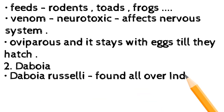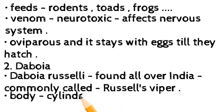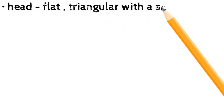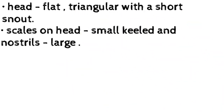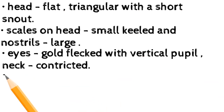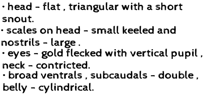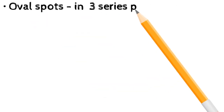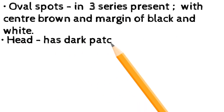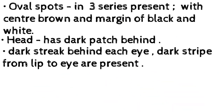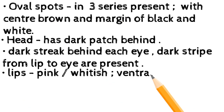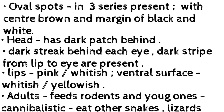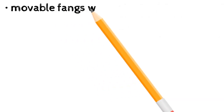The cobra feeds on rodents, toads, and frogs. Venom is neurotoxic, affecting the nervous system. Oviparous; stays with eggs until they hatch. Daboia russellii is found all over India, commonly called Russell's viper. Body cylindrical and narrow at both ends. Head flat and triangular with a short snout; scales on head small and keeled. Nostrils large; eyes gold-flecked with vertical pupil. Neck contracted; broad ventrals; sub-caudals double. Belly cylindrical. Body color shades of brown; oval spots in three series with brown center and black-and-white margin. Head has a dark patch behind each eye; dark streak behind each eye; dark stripe from lip to eye. Lips pinkish-white; ventral surface whitish-yellow.